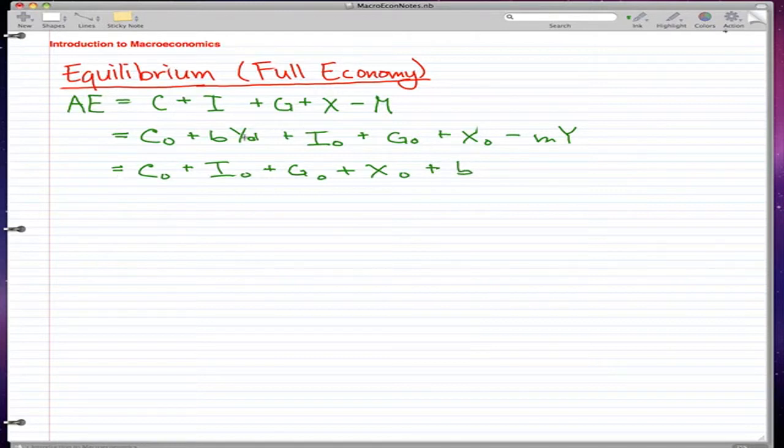and we also know that YD is actually 1 minus TY, disposable income, right? So disposable income is our income after we pay all our taxes. So 1 minus T is the amount of taxes that we keep from Y, that is our total income that we make.